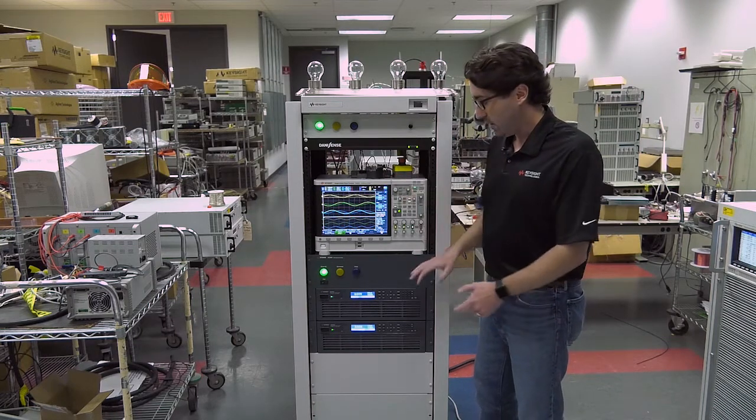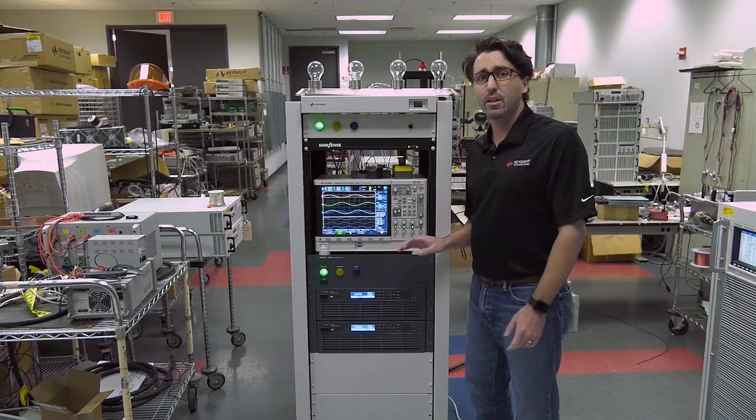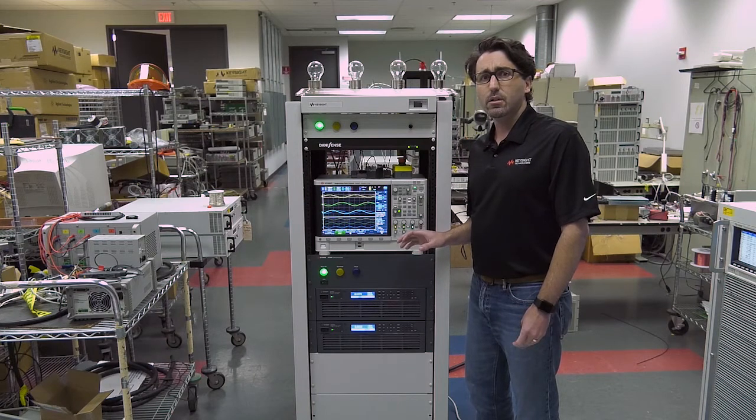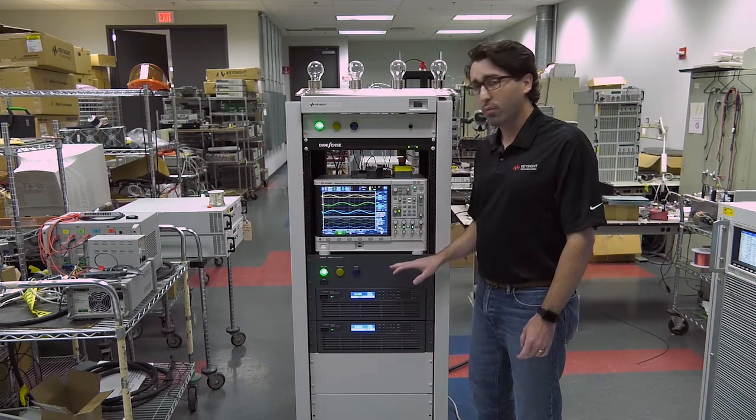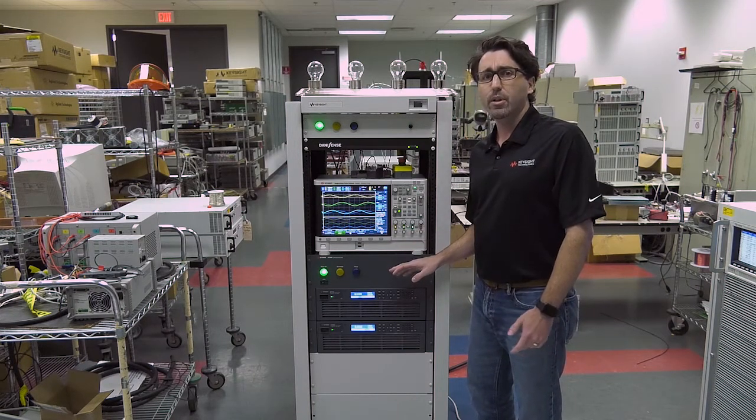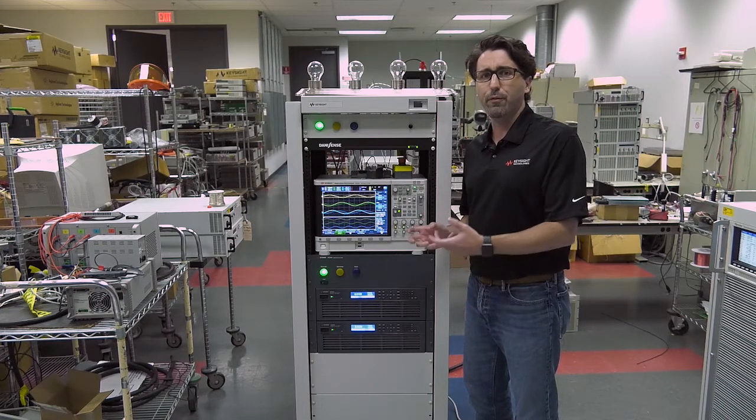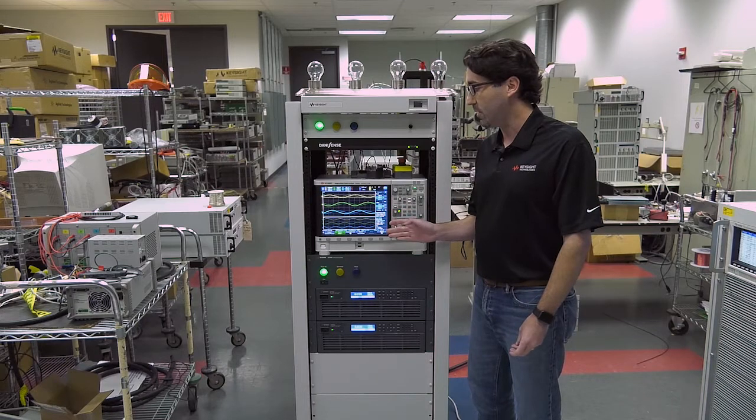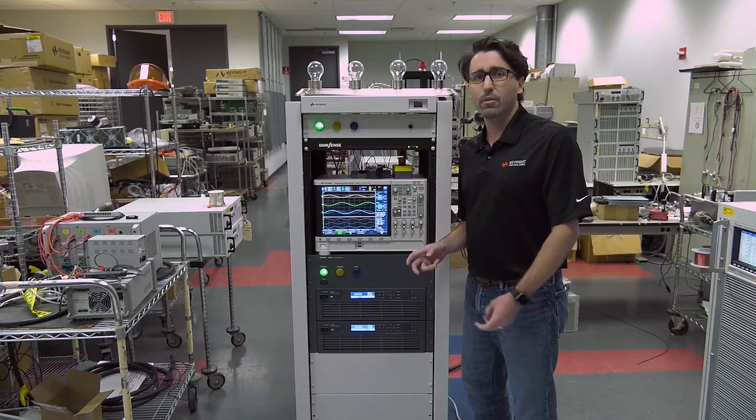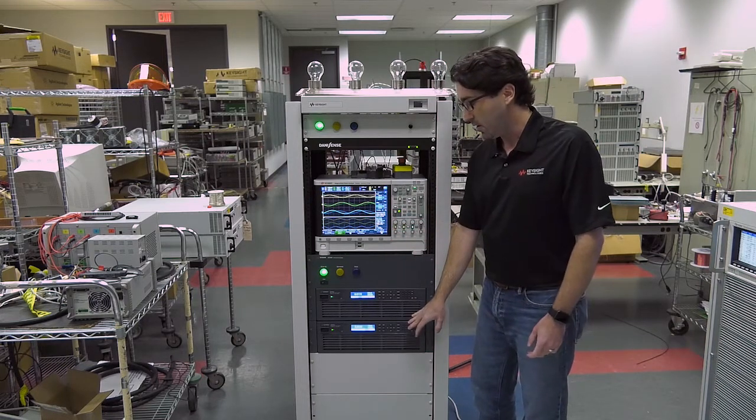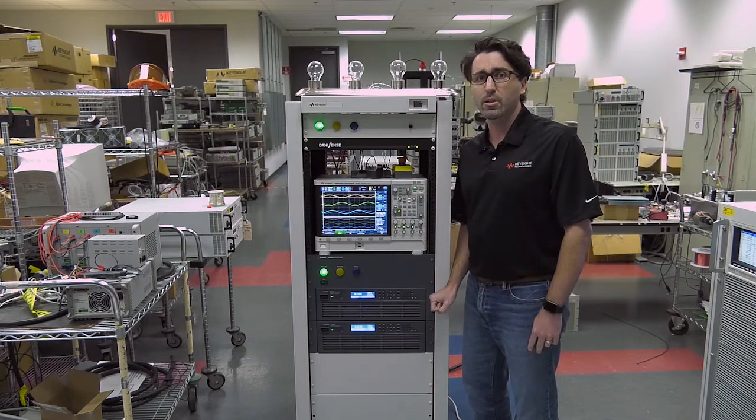Now today we've hooked this system up to a very clean AC source in order to provide the three-phase AC input, because regular grids can have some voltage noise on them that would affect the measurement in this system. So you need to do this in a laboratory environment to show how clean the RP7900 regenerates back to the grid.